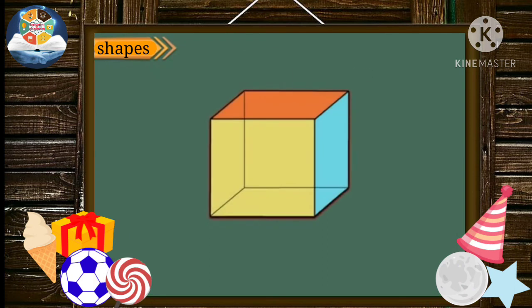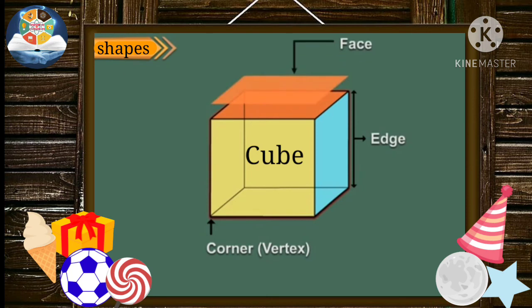Solid shapes have faces, edges and vertices or corners. Here is a solid shape. It looks like a dice. This is a cube. It has six flat faces, twelve edges and eight vertices. And all its edges are equal.